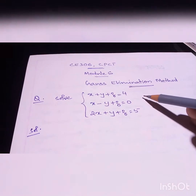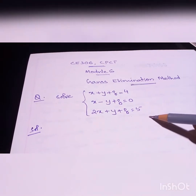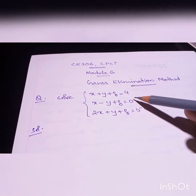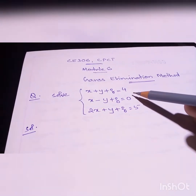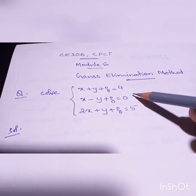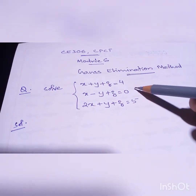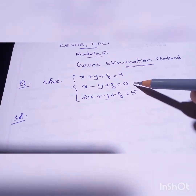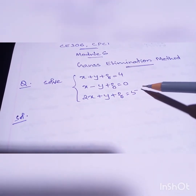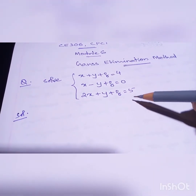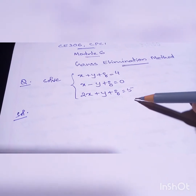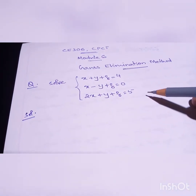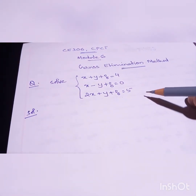So for that let's go for an example. We have three equations to solve: x plus y plus z is equal to 4, x minus y plus z is equal to 0, and 2x plus y plus z is equal to 5. So these are the three equations.